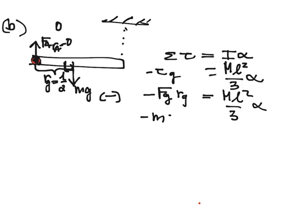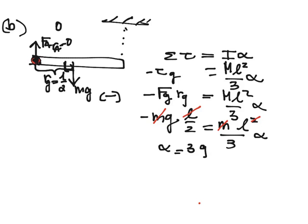I'm going to plug in minus MG and L over 2 equals M, and these are the same M's, ML squared over 3 alpha. My L's cancel, one of my L's cancels. My M's cancel, and I can cross multiply the 3, so I get alpha is equal to 3G over 2L. So, that's my answer to B.